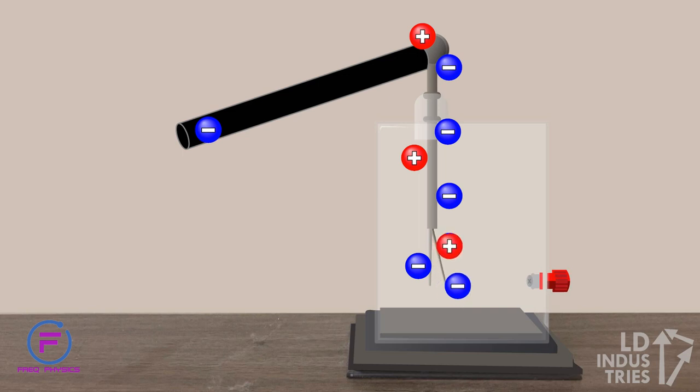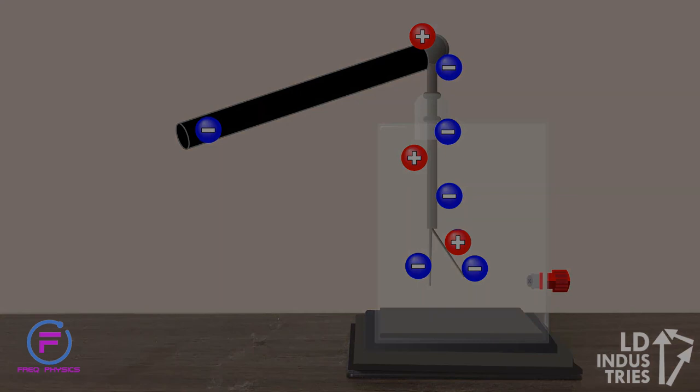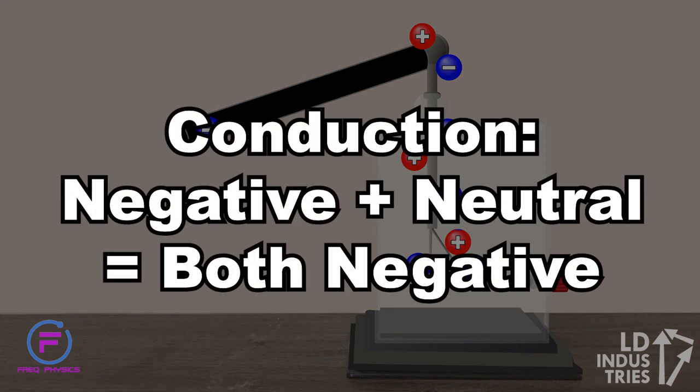And the leaves repel due to the buildup of negative charge. Note how in conduction a negative rod caused the neutral electroscope to also become negatively charged.